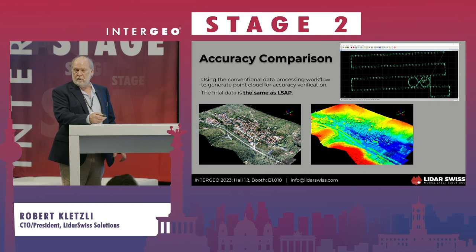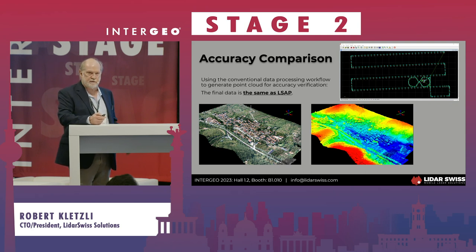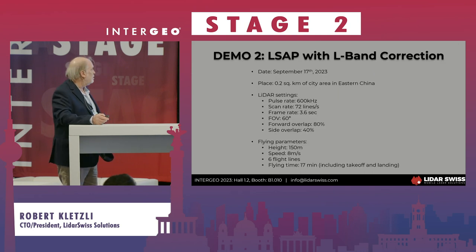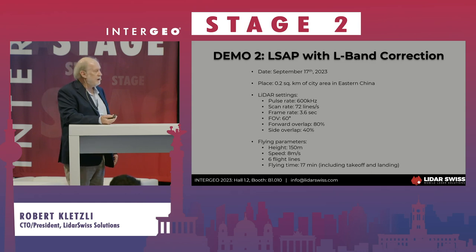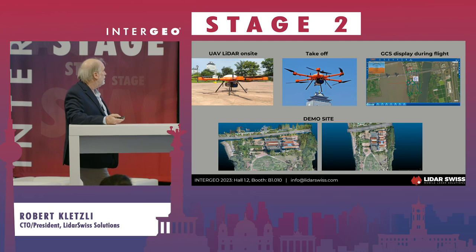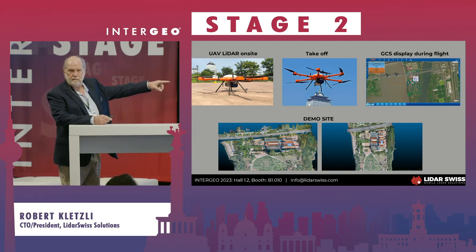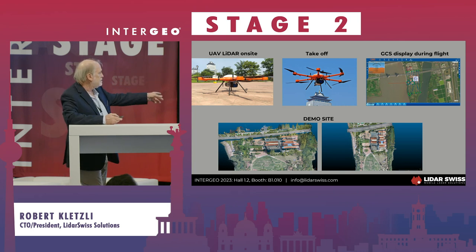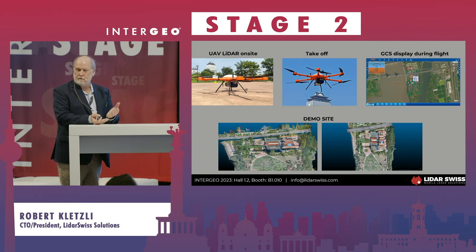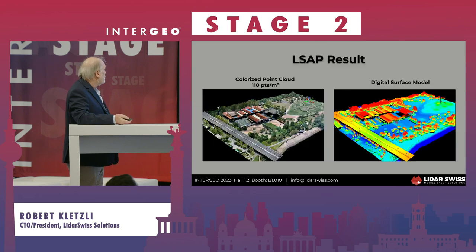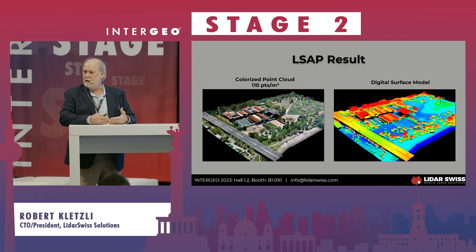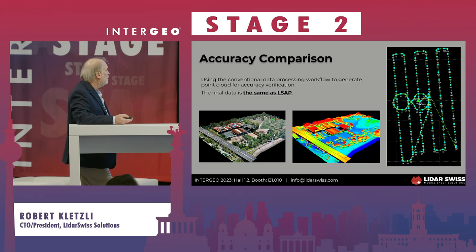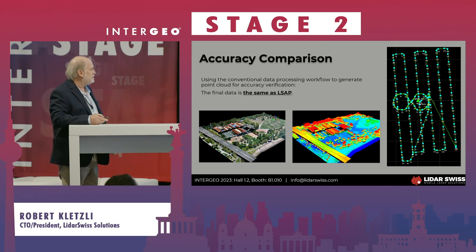The final data from LSAP is just as good as post-process kinematic. We have another demo from a different part of China — a park project going faster, with the laser at about 600 kilohertz, at 150 meters and 8 meters per second. It's six flight lines, same process as before — edge matched and adjusted. Here's our colorized point cloud and digital surface model. We don't have any control on this one, so we can only compare LSAP to the post-process kinematic, and it's centimeter level as well.